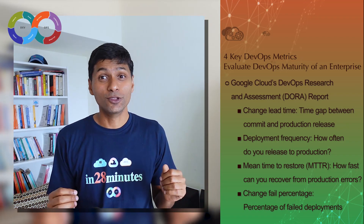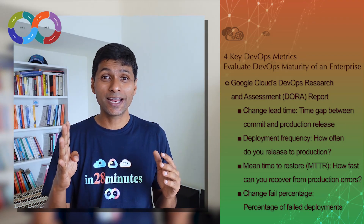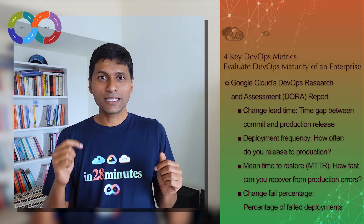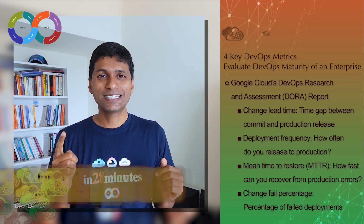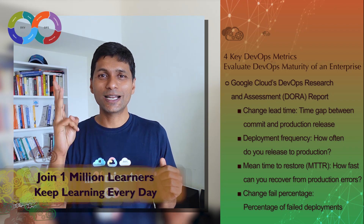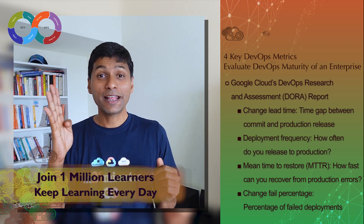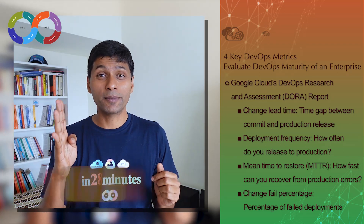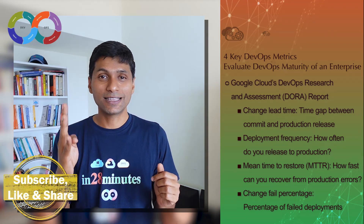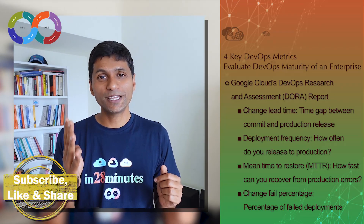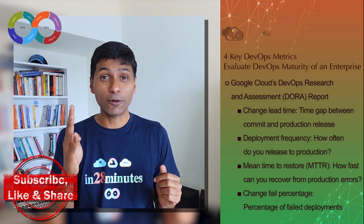So those are the four metrics you can use to evaluate how mature your enterprise is at DevOps. The first is change lead time, the second is deployment frequency, the third is MTTR — mean time to recovery — and the fourth is the percentage of deployments that are successful going into production. Those are the four metrics to evaluate DevOps maturity in your organization.